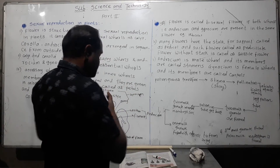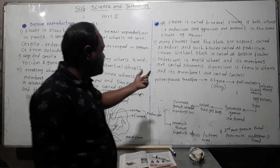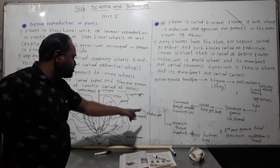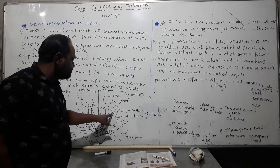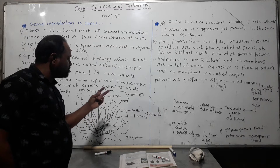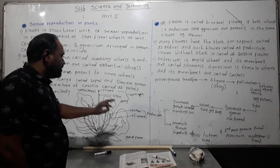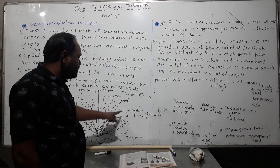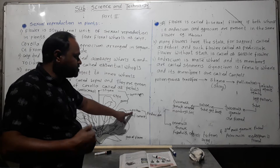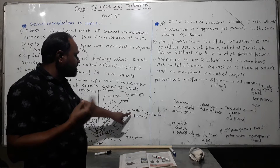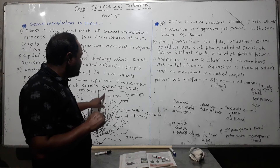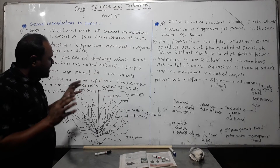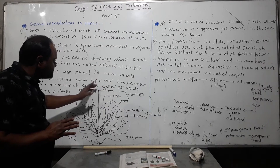In sexual reproduction in flowers, pollen grains are produced by the anther, which is bilobed — meaning it has two lobes. The anther produces pollen grains, which are then transferred to the stigma. The filament supports the anther. The stigma is sticky, so pollen grains stick to it when transferred.